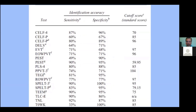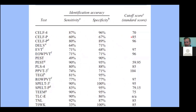My other main point: look at the variation in cutoff scores used. When test developers are getting their sensitivity and specificity, they are optimizing the cutoff score to get the best sensitivity and specificity. The CELF-P is a great example — if we use a cutoff of 85, you only get it right about a third of the time. However, if we use 96 as the cutoff score, you get relatively strong sensitivity and specificity.